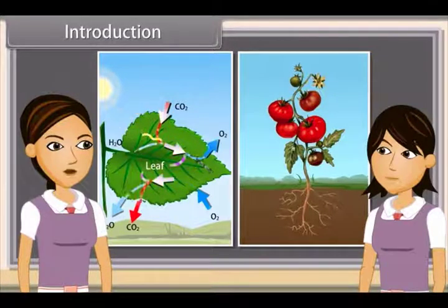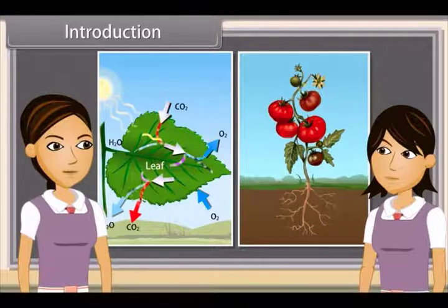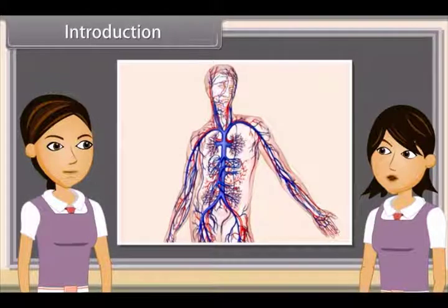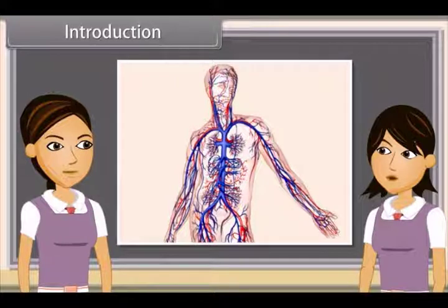All this transportation is the function of conducting tissues. Yes, Ankita, similarly in animals, the food absorbed by the gut has to be carried to all the body parts. Oxygen absorbed in the lungs has to be transported to every cell of the body. The carbon dioxide produced in the cells has to be carried to the lungs for elimination. All such functions are the result of a transport system.